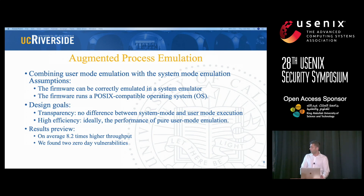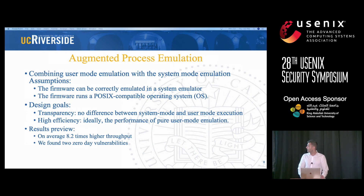We have two assumptions: the firmware can be correctly emulated in a system emulator, more specifically in system mode QEMU, and the firmware runs a POSIX-compatible operating system. As a spoiler, on average we achieved 8.2 times higher throughput, and we found two zero-day vulnerabilities.